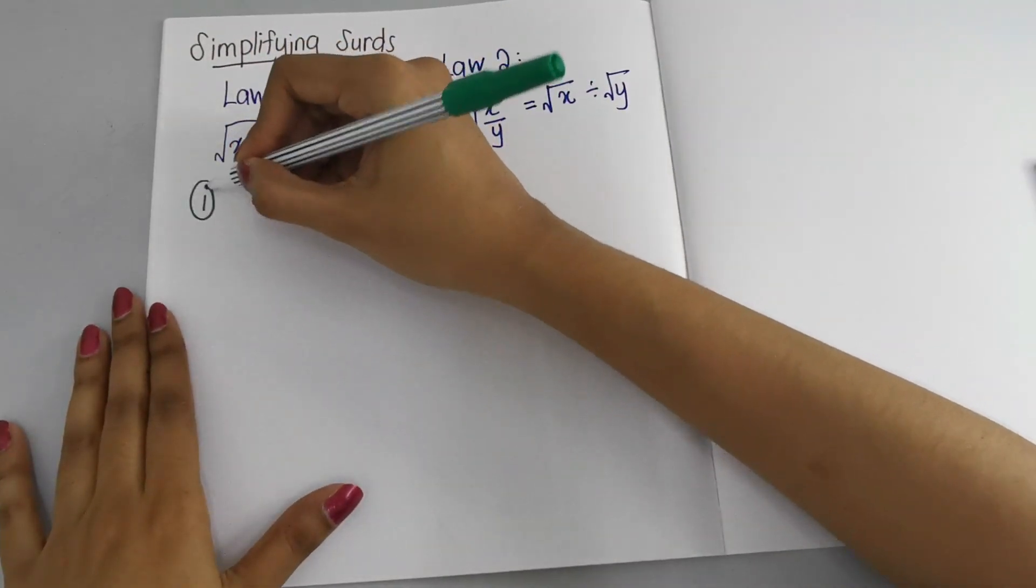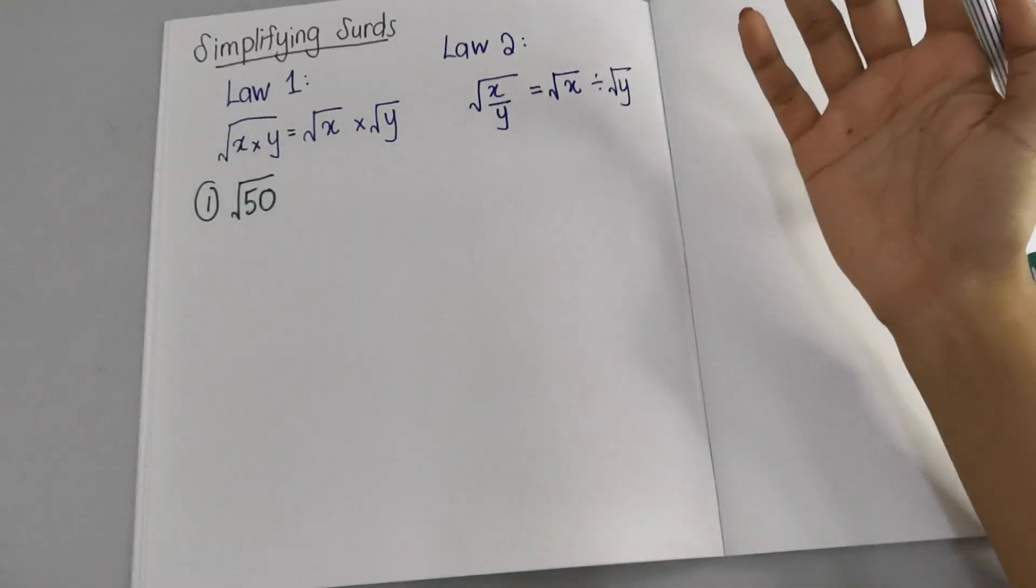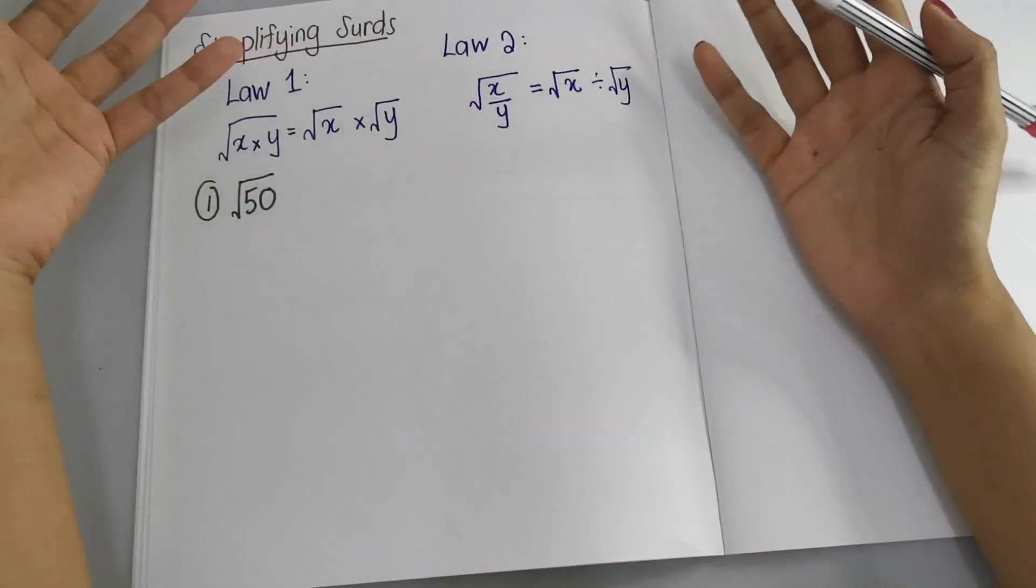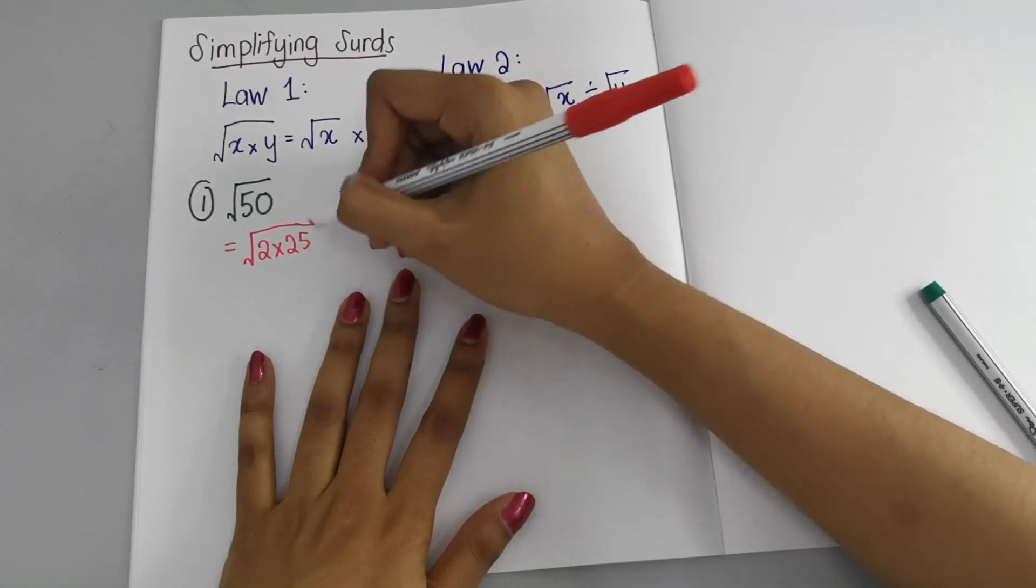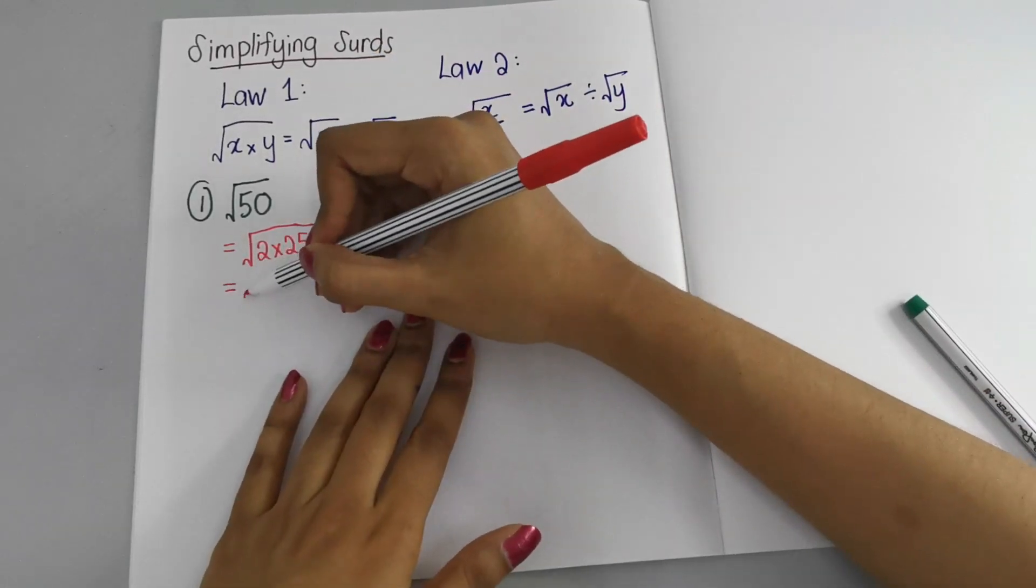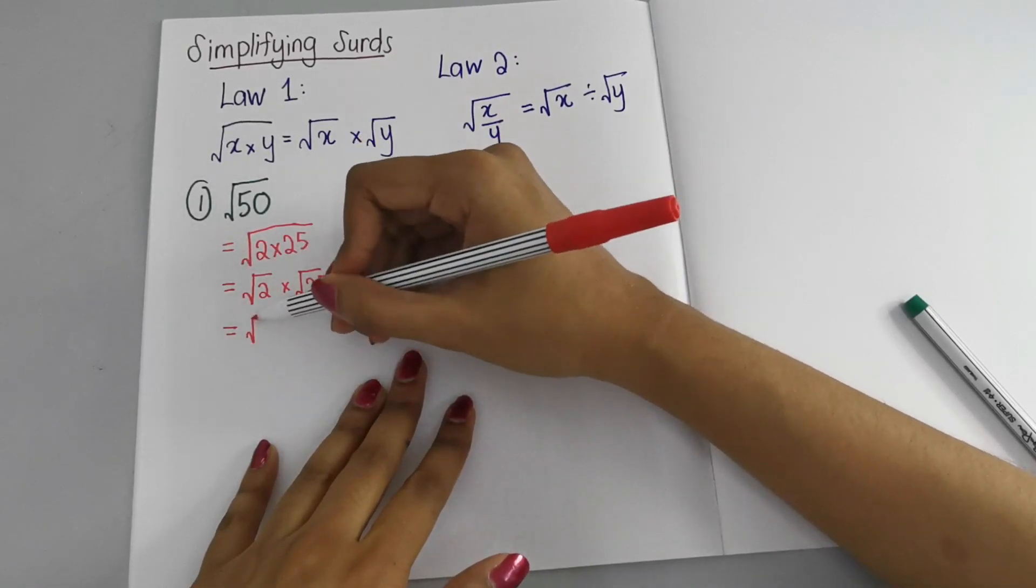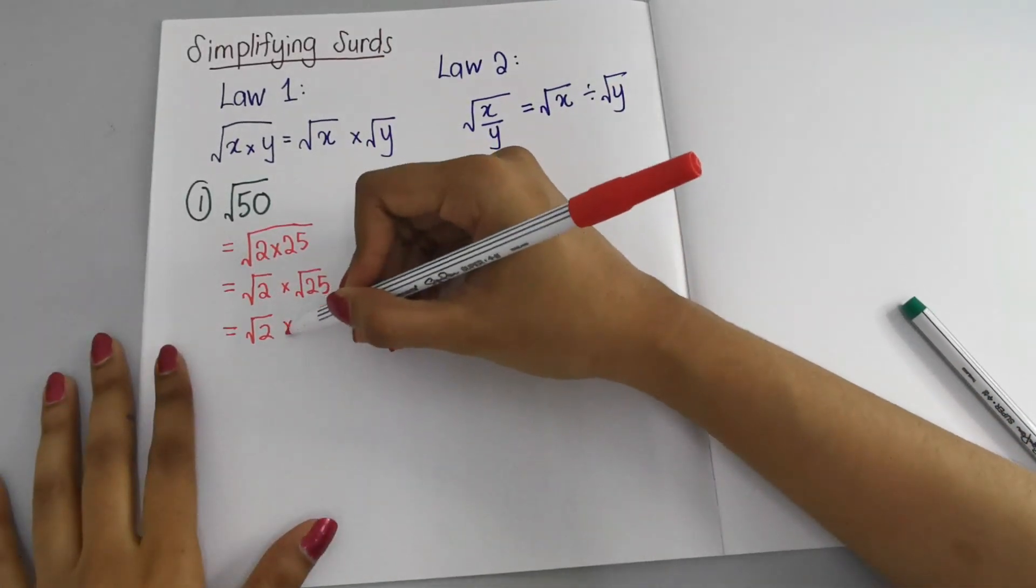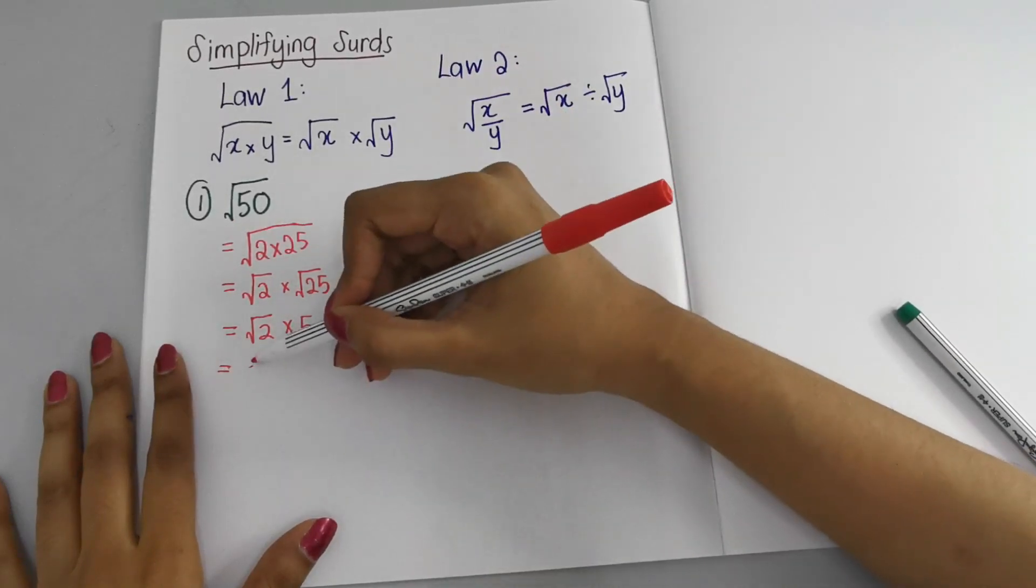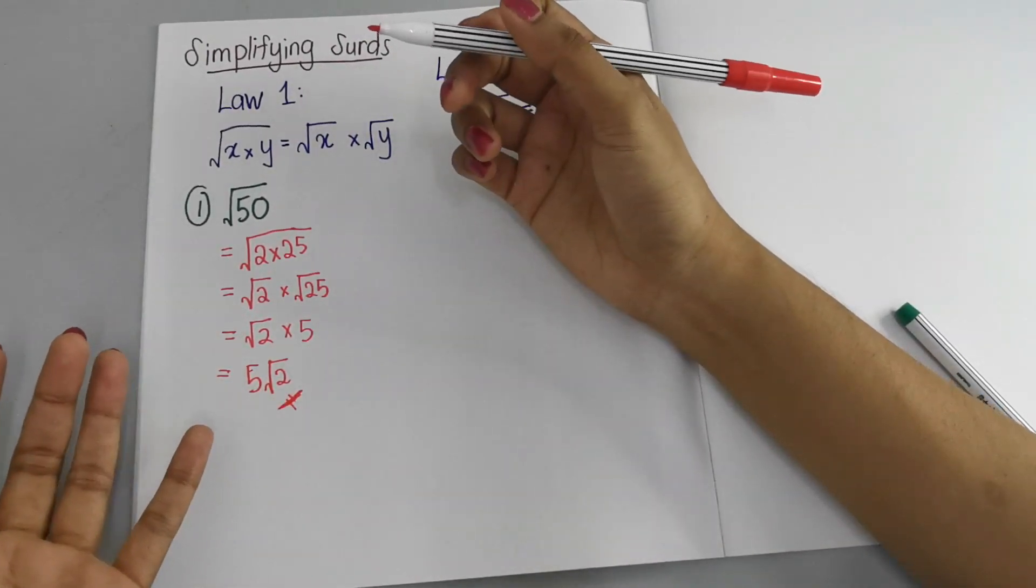First, let's try this: simplify √50. Immediately what needs to come to your mind is what factors can I use - what number times what number will give 50. Looking at it, 2 × 25 gives us 50. So I'm going to separate: √2 × √25. √25 we can actually square root it to get 5. So our final answer is 5√2. √2 can't be solved, so we leave it as √2.